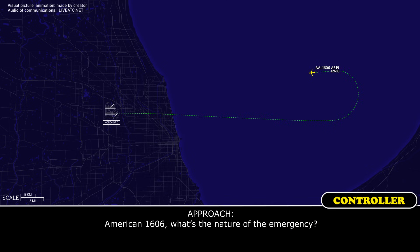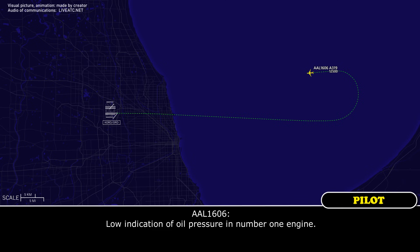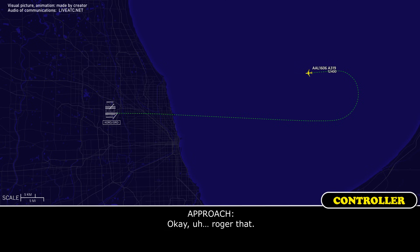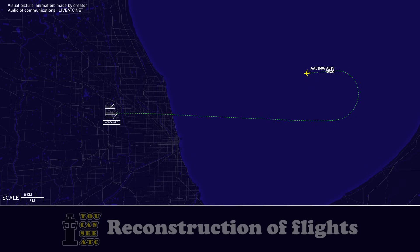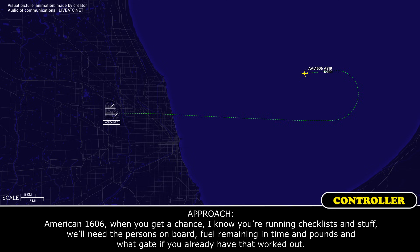American 1606, what's the nature of the emergency? Low indication of oil pressure, number one engine — correction, quantity. American 1606, when you get a chance, I know you're running checklists, we'll need souls on board, fuel remaining in time and pounds, and gate assignment if you have that worked out.